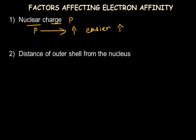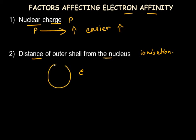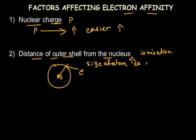The second factor is the distance of the outer electron from the nucleus. These factors are similar to those affecting ionization energy. The incoming electron is gained on the outer shell of an atom. If this outer shell is farther from the nucleus, it is more difficult for an electron to be gained. Therefore, as the size of the atom increases, the electron affinity value decreases.